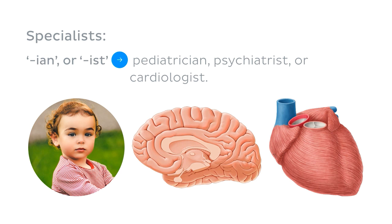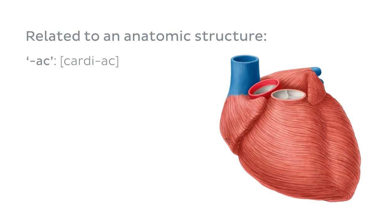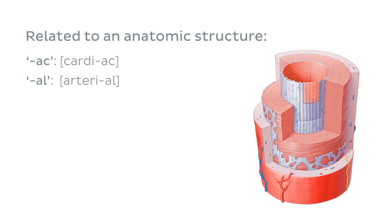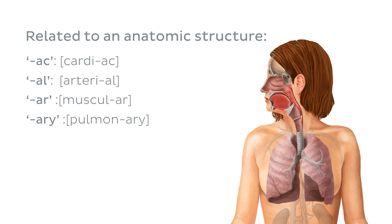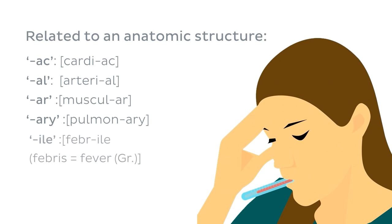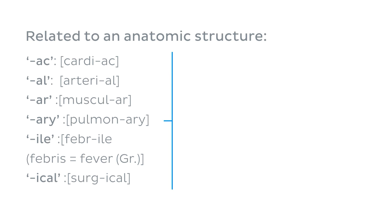Suffixes can also simply indicate something is related to or belongs to an anatomical structure or condition — for example, terms ending in '-ac' as in cardiac, '-al' as in arterial, '-ar' as in muscular, '-ary' as in pulmonary, '-ile' as in febrile (febris meaning fever in Latin), and '-ical' as in surgical. All of these mean 'pertaining to' in some way or another.